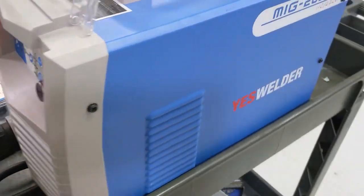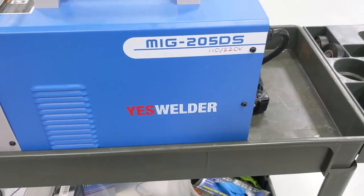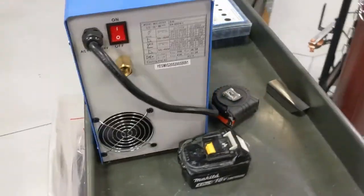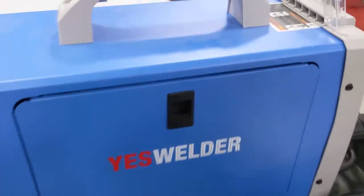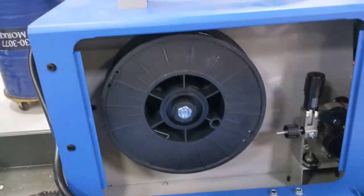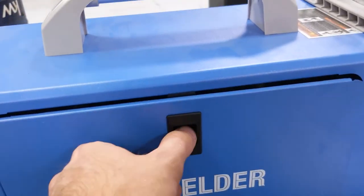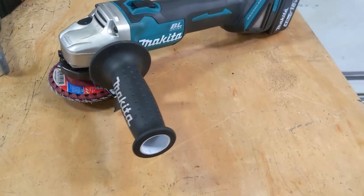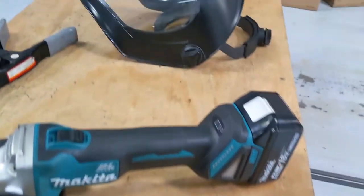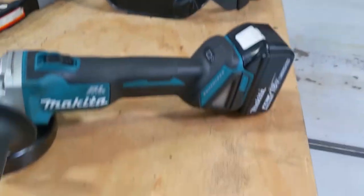For the welder, I'm using the Yes Welder Meg 205DS. Currently I'm using 110, and with that, the wire I'm using is Yes Welder's gasless flux cord, just regular steel. And then I'm using my Makita grinder with a face shield.